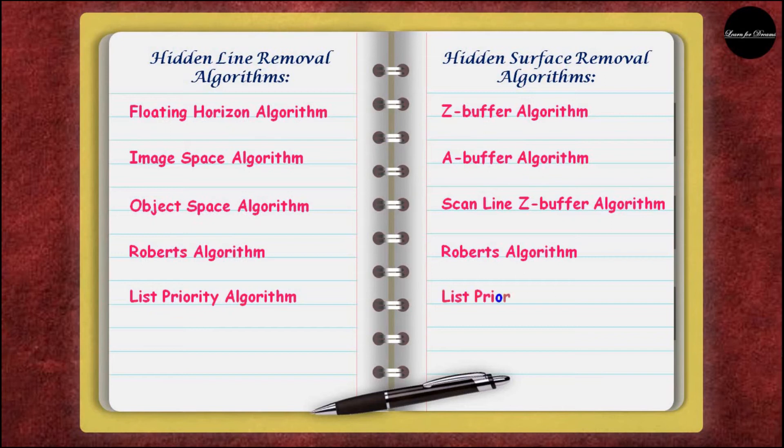Hidden surface removal algorithms are: Z-buffer algorithm, A-buffer algorithm, scanline Z-buffer algorithm, Roberts algorithm, and list priority algorithm.